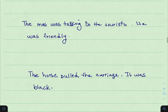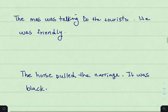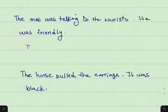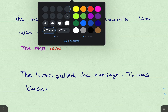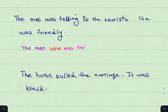Let's take a look at these examples. 'The man was talking to the tourist. He was friendly.' Here, we can rewrite the sentence and make it into one. Since 'the man' is a person, we use 'who'. So it becomes: 'The man who was talking to the tourist was friendly.'